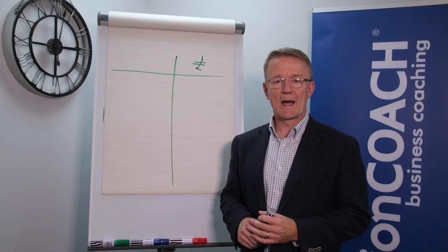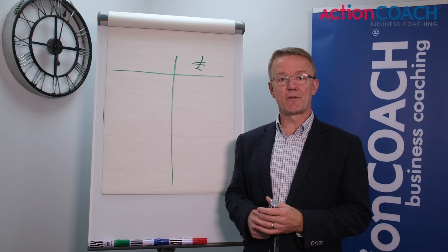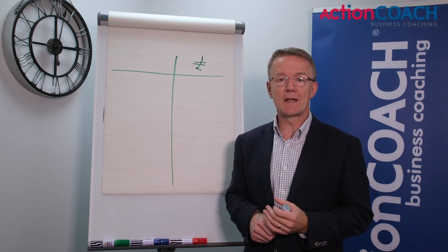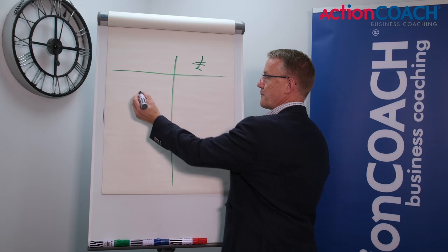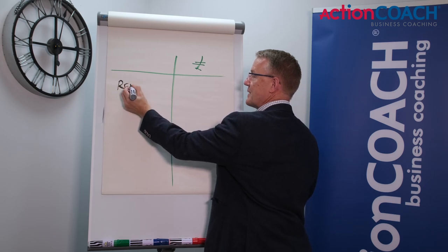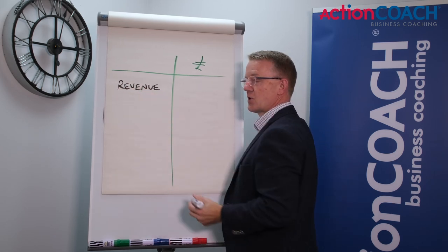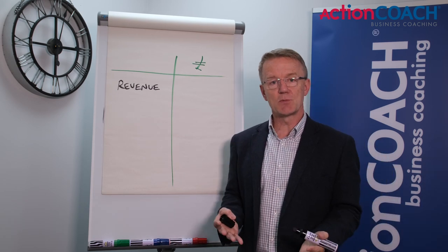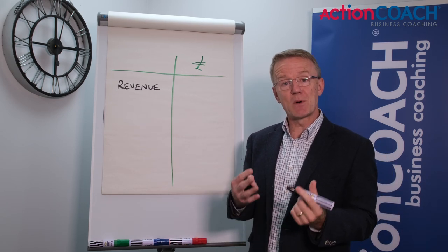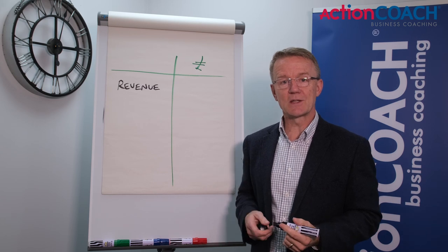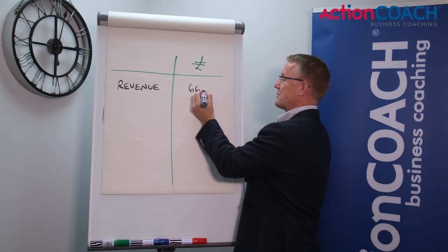So let's have a quick look at the Profit and Loss Statement. We're going to start with the headline figure — the top line, if you like — in every single business, and that is your revenue. Now you might hear people referring to this as sales, some people talk about turnover; the terms are interchangeable. In this company the revenue, the amount of money taken from customers for products and services, is £66,000.